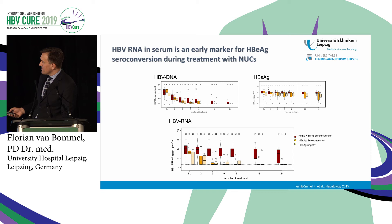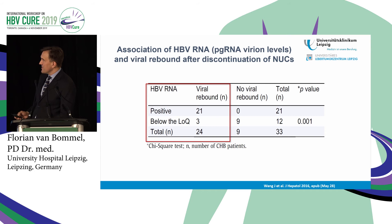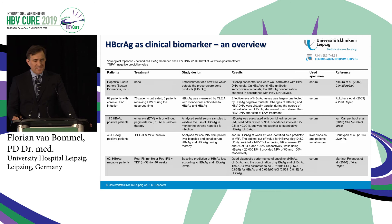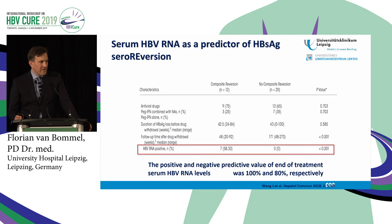RNA is an early marker for E antigen seroconversion during nucleoside analogue treatment — patients who do not lose E antigen remain RNA-detectable for a very long time. The same holds true for interferon treatment, where a very fast decrease to undetectable levels is seen in patients who lose E antigen. Core-related antigen is also a predictive marker for treatment response for PEG-interferon, nucleoside analogues, or combination treatment, as shown in studies with lamivudine, entecavir, and combination with interferon.